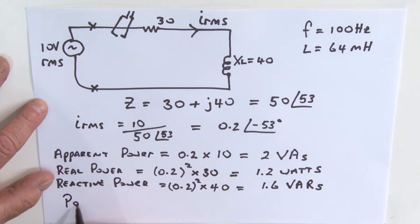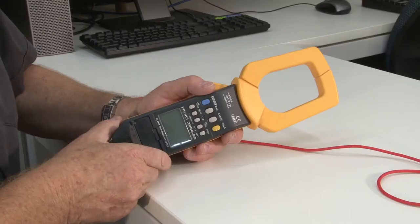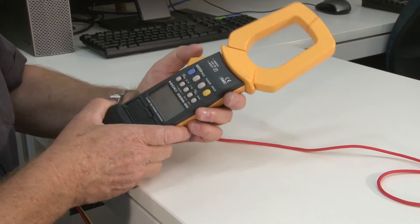Finally, we could talk about power factor, and our power factor in this circuit is going to be equal to the cosine of this angle here, 53 degrees.